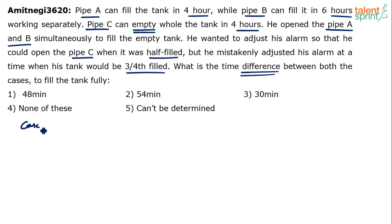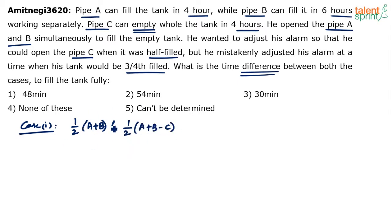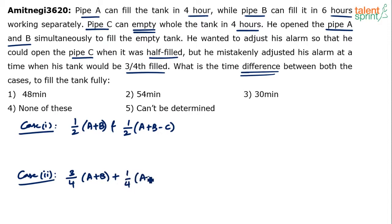Case one: half of the work is done by A and B, and the other half is done by A plus B minus C — C does negative work. Case two: three-fourths of the work is done by A and B, and one-fourth of the work is done by A, B, and C (with negative sign for C since it does negative work). So it's half-half in case one, and three-fourths plus one-fourth in case two. Now let us find the time required when A and B work together, and when all A, B, and C work together.